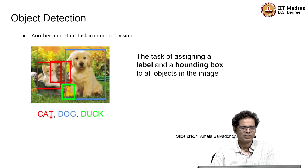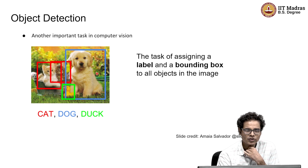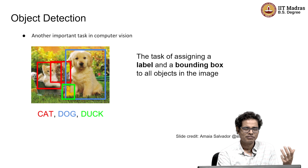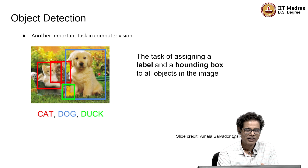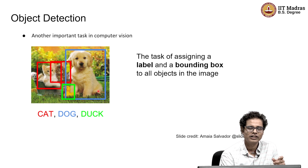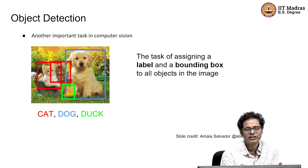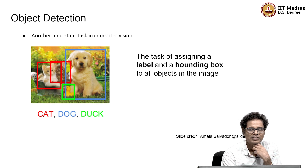What do we mean by object detection? In recognition, we assumed the image has only one foreground object and we label the whole image as that object — for example, tiger, cat, or dog. But in general, we never get such an image. We'll get an image in which there are many objects, so the task is not just object classification but also detection.